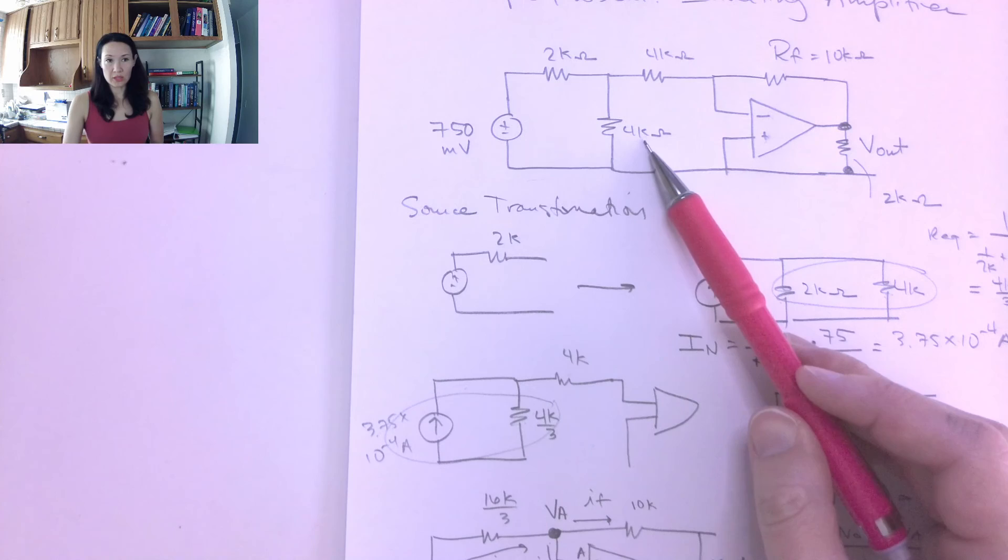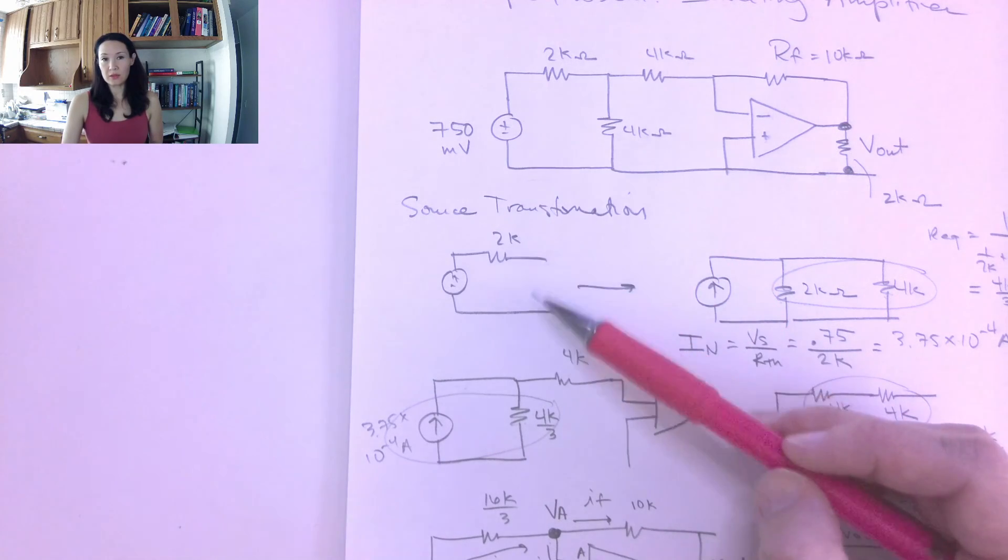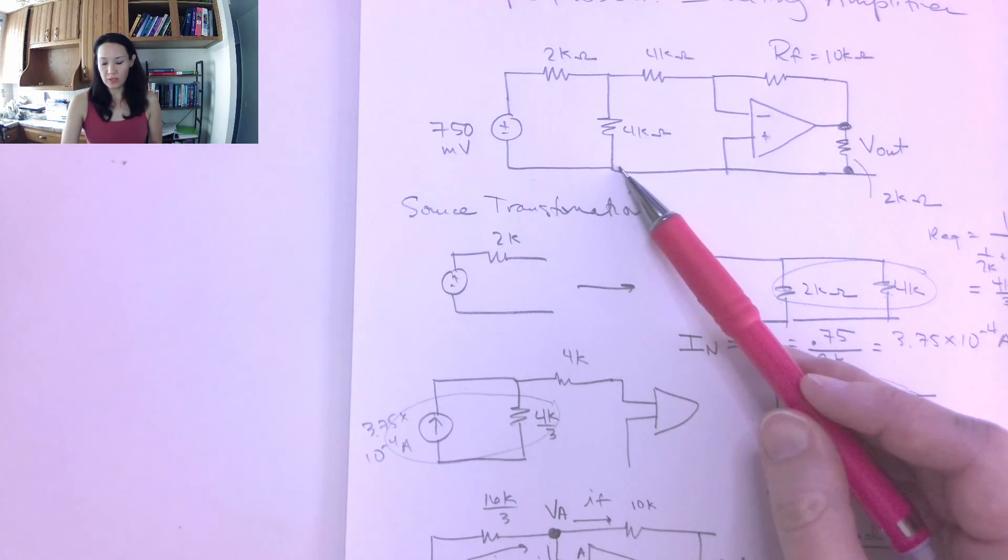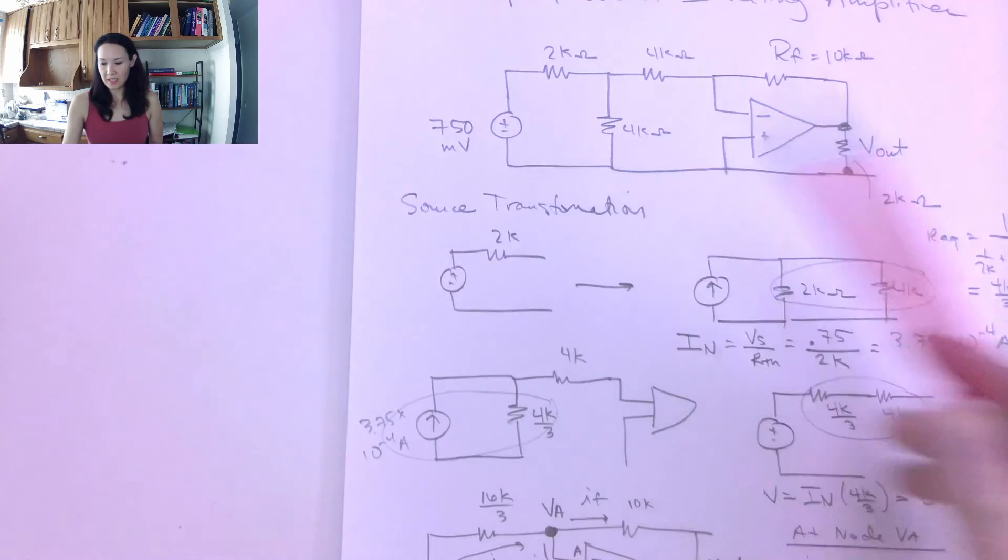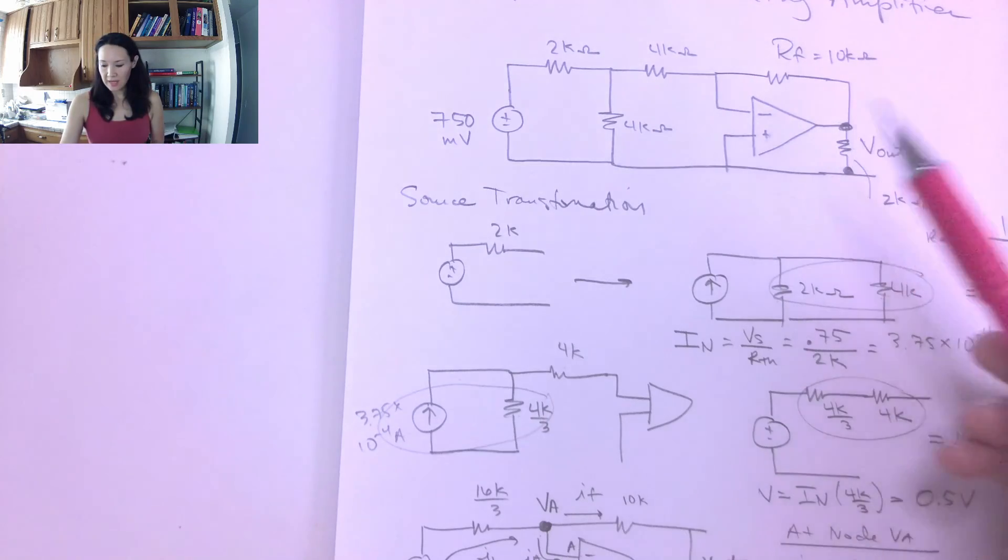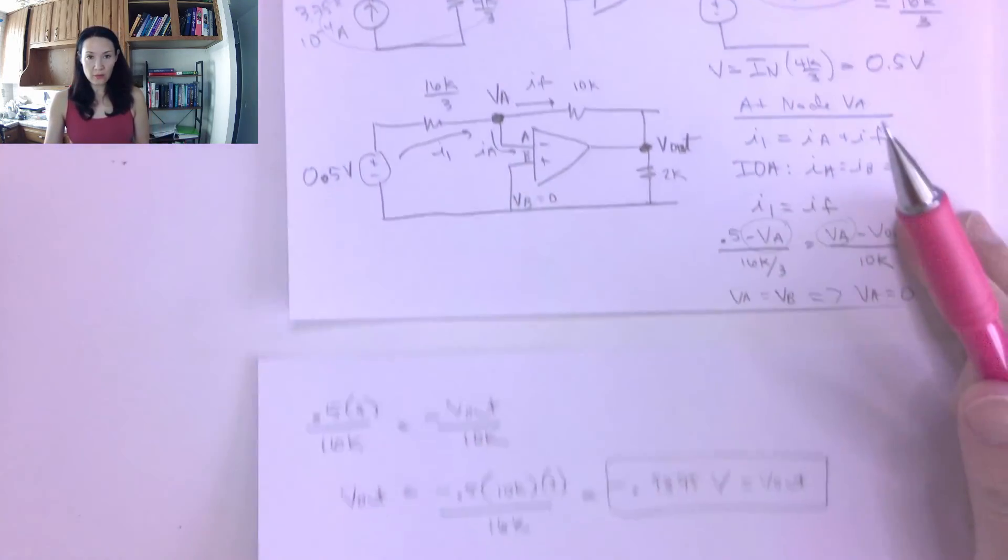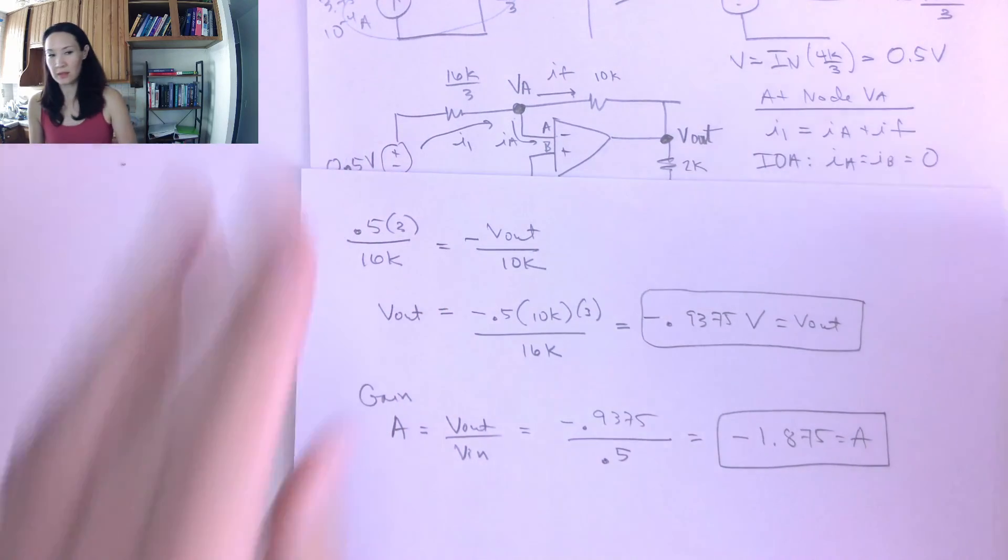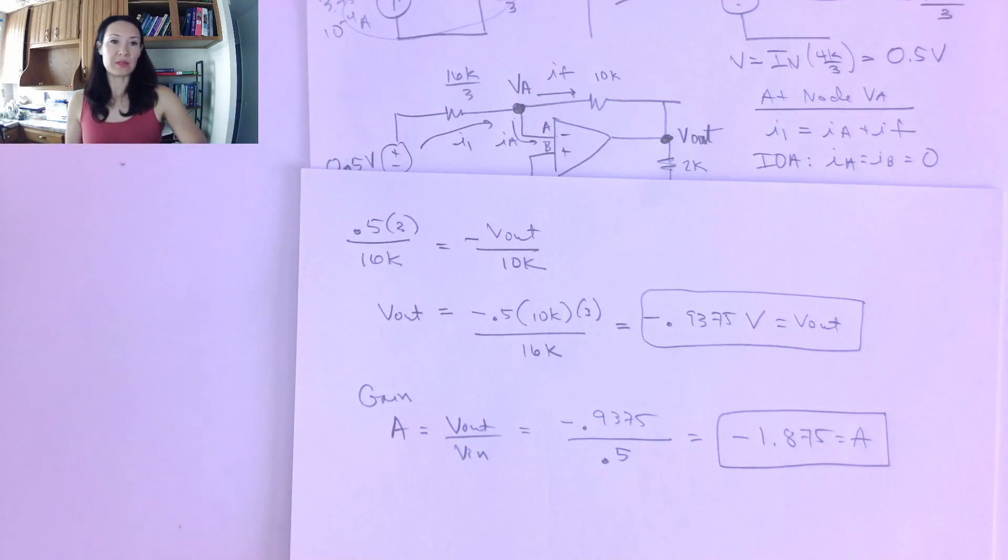And then do circuit analysis over here to simplify if you like, or you could just go ahead and start with your node voltage method from here without doing the source transformation. You can basically pick your favorite circuit analysis technique to find the voltage at VA and Vout. So let me know if you have questions about this example, and we'll go on to some of the next op amp circuits.